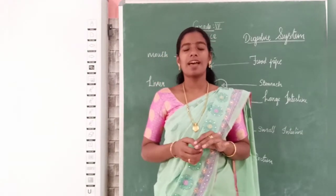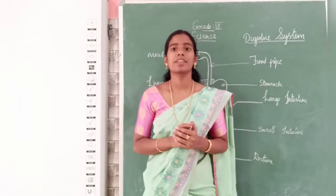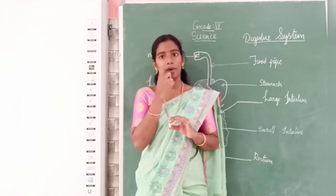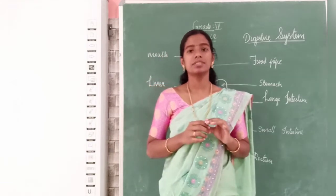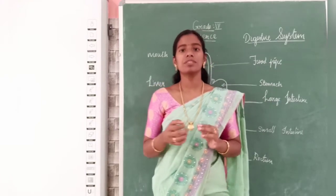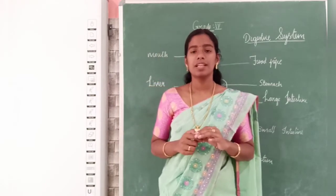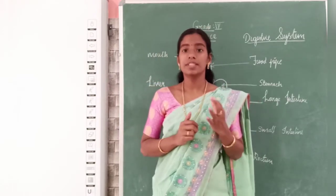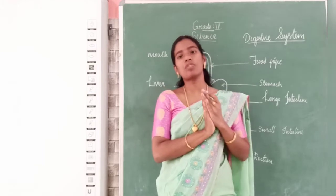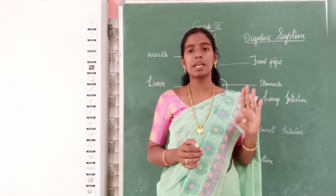Good morning, dear students, and welcome back to our science class. Yesterday we started a new unit called organ systems, where we are learning about the various organ systems. I gave an introduction about what organ systems are made up of: organ systems are made of organs, organs are made of tissues, tissues are made of cells, and cells are the smallest unit of the human body. In organ systems, we learned there are four types.